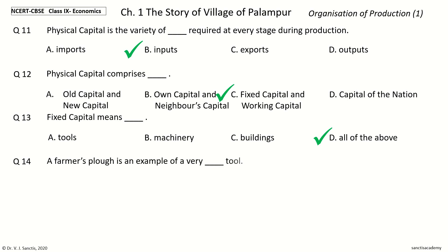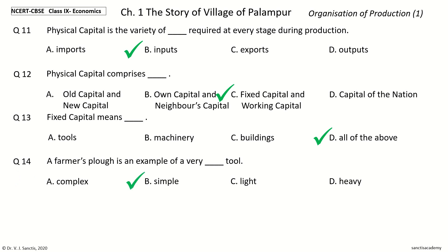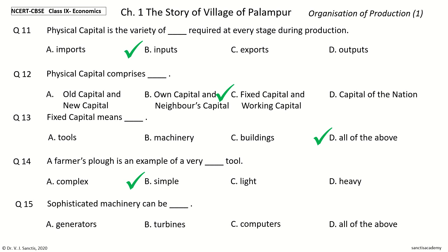Question 14: A farmer's plow is an example of a very dash tool. The options are complex, simple, light, or heavy. The answer is simple. So, a farmer's plow is an example of a very simple tool. Question 15: Sophisticated machinery can be dash. The options are generators, turbines, computers, or all of the above. The answer is all of the above — generators, turbines, and computers.